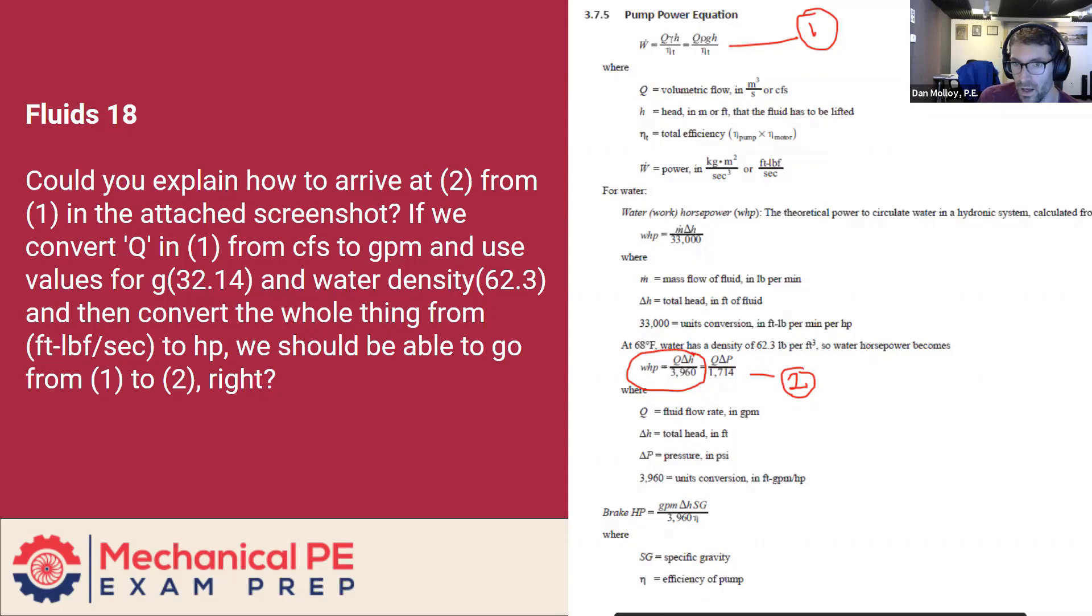If we convert Q, the volume flow rate, from cubic feet per second to GPM, and we use values for G, 32.14, and for the density of water, and then convert the whole thing from foot pounds per second to horsepower, we should be able to go from one to two, right? Yes, we should be. So let's try. I put together a quick example to illustrate those two, and hopefully we can reconcile those two formulas together.